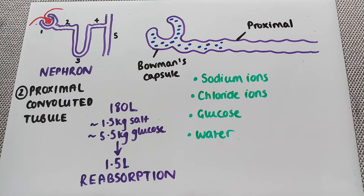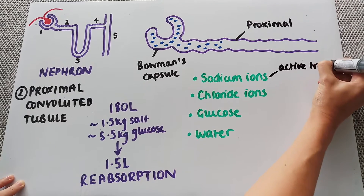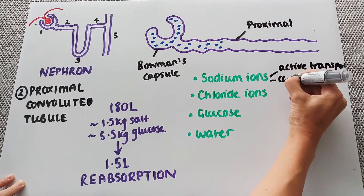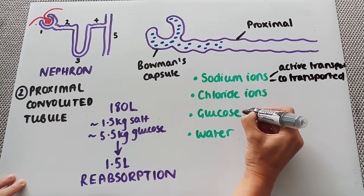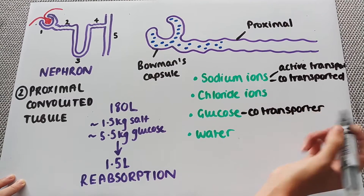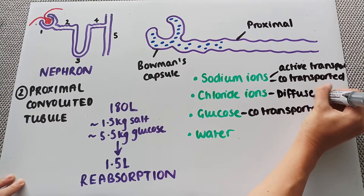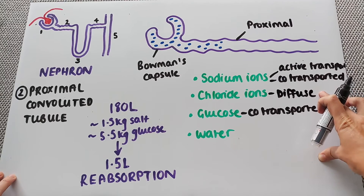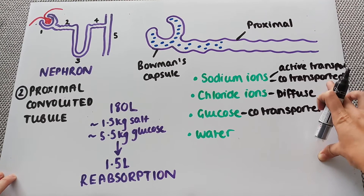These don't just move through the proximal convoluted tubule — they need to be transported in specific ways, and each is slightly different. Sodium ions can either go by active transport, or they are co-transported with glucose through a protein in the membrane. The chloride ions diffuse through the proximal convoluted tubule membrane, following the sodium ions. Sodium ions have a positive charge and chloride ions have a negative charge, so they can quite easily diffuse following the sodium ions.